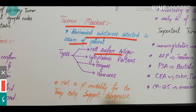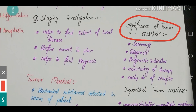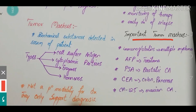Tumor markers are biochemical substances detected in the serum of a patient. Types include cell surface antigens, cytoplasmic proteins, enzymes, and hormones. Tumor markers cannot be used as a primary modality for establishing a diagnosis — they only support the diagnosis. Their significance includes use for screening, supporting a diagnosis, as a prognostic indicator, for monitoring therapy, and for early diagnosis of disease relapse. Important tumor markers include immunoglobulins for multiple myeloma, alpha-fetoprotein for teratoma, PSA for prostatic carcinoma, CEA for colon and pancreatic carcinoma, and CA-125 for ovarian carcinoma.